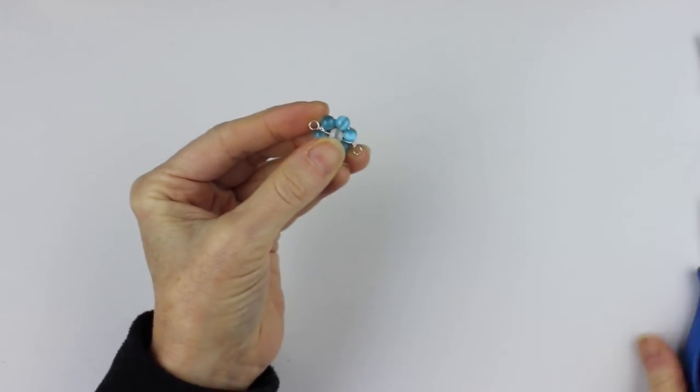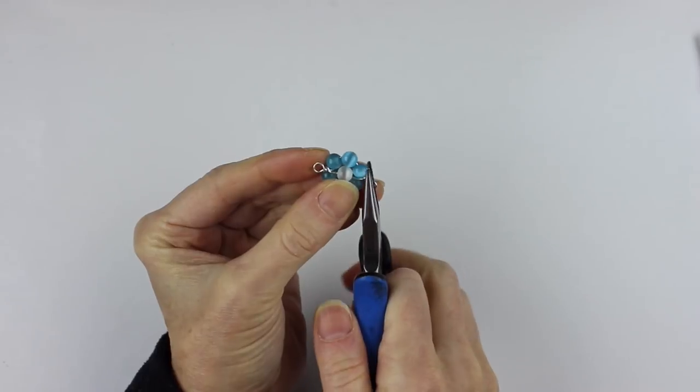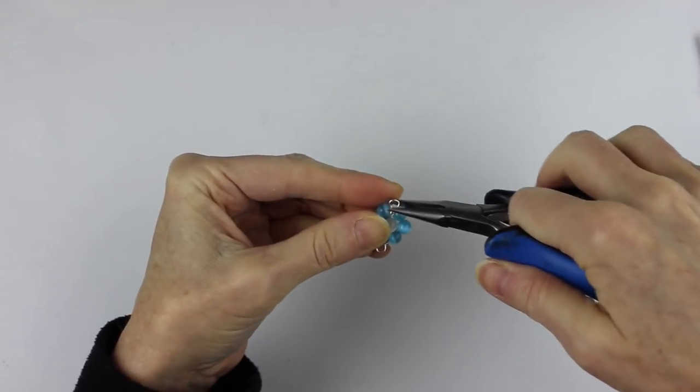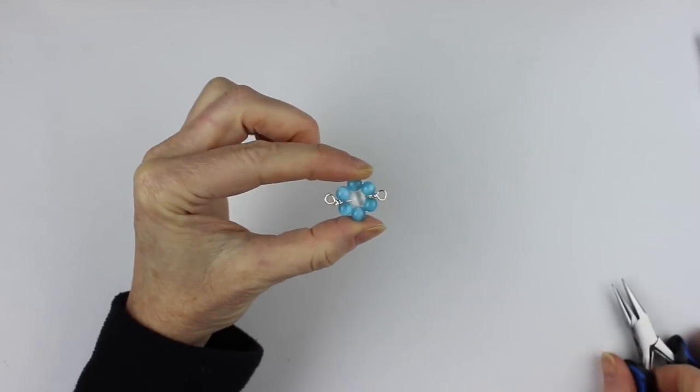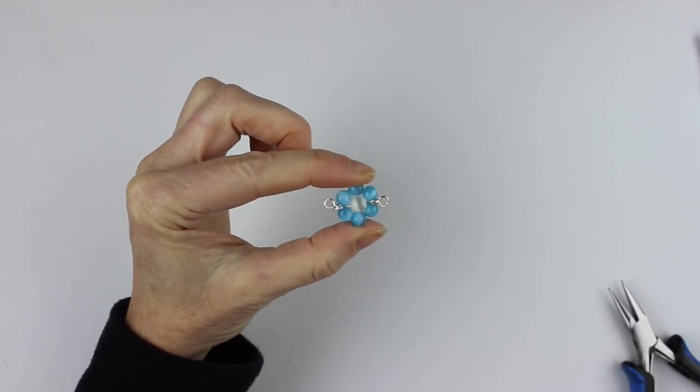And if you have any sharp and sticky ends, you're going to just squeeze them down like that. So there's your daisy with the loop on either end.